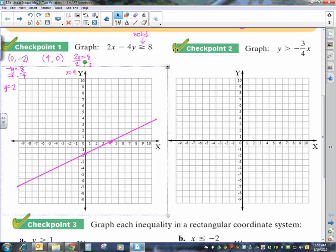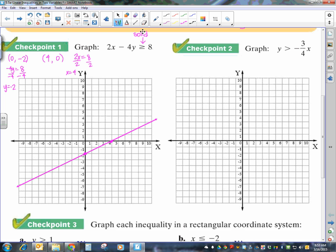Now, the next thing that we said was to choose a test value. Now, if the line doesn't go through it, the best test value point for you to use is 0, 0. And, since it doesn't go through, I'm going to choose the point 0, 0. And, when I plug that in, that's 2 times 0 minus 4 times 0 is greater than or equal to 8. Is 0 greater than or equal to 8? This is a false statement.